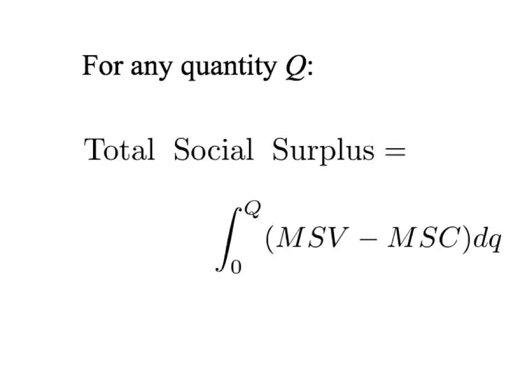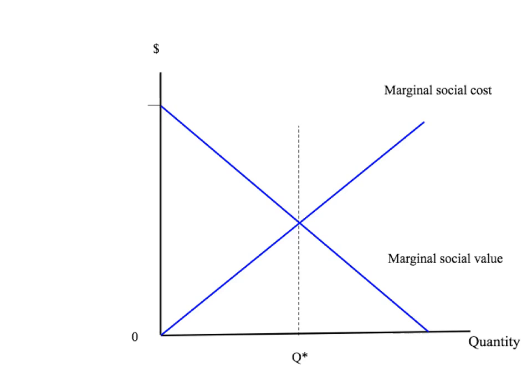Mathematically, we can summarize this as follows. For any quantity Q, the total social surplus created by producing and consuming Q units is given by the integral from zero to Q of the difference between marginal social value and marginal social cost — which is just the area under the marginal social value curve minus the area under the marginal social cost curve from zero to Q units.